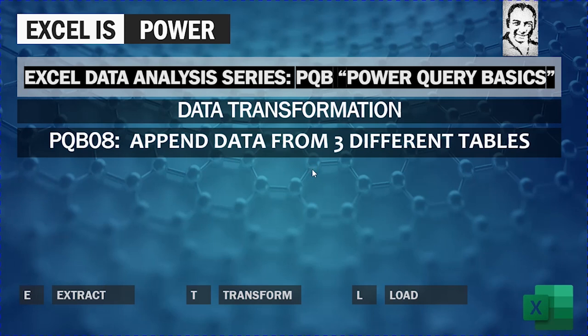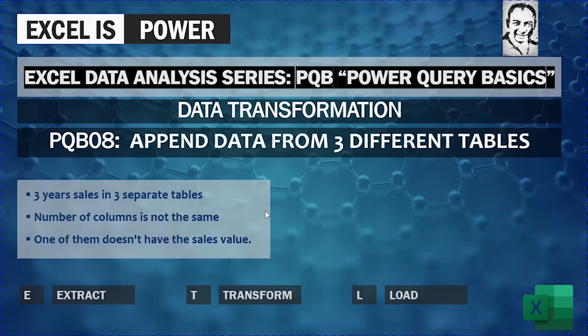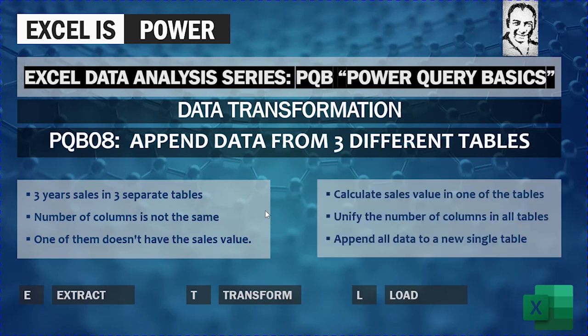In this video, we are going to see how we can append data from three different tables. We have an example of three years of sales in three separate tables. The number of columns in each table is not the same — one of these tables does not have the sales value. What we require is to calculate the sales value in one of the tables and then unify the number of columns in all tables, so we can append all data together in one single table.